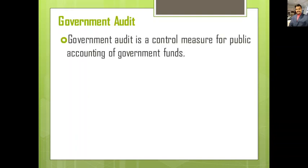The third type of audit under organization structure is government audit. The word 'government' is most important here. Government audit is a control measure for public accounting of government funds. The government manages government companies, public companies, and other public enterprises, and it is responsible for all their accounting.